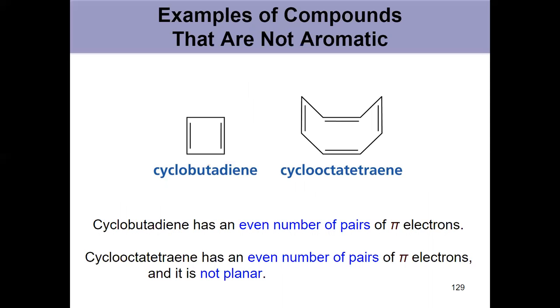So here's two examples of things that aren't aromatic. Cyclobutadiene, it only has 4 pi electrons or 2 pairs, so it's not aromatic. Cyclooctatetraene, it's also, it's not planar, and it has 8 pi electrons.